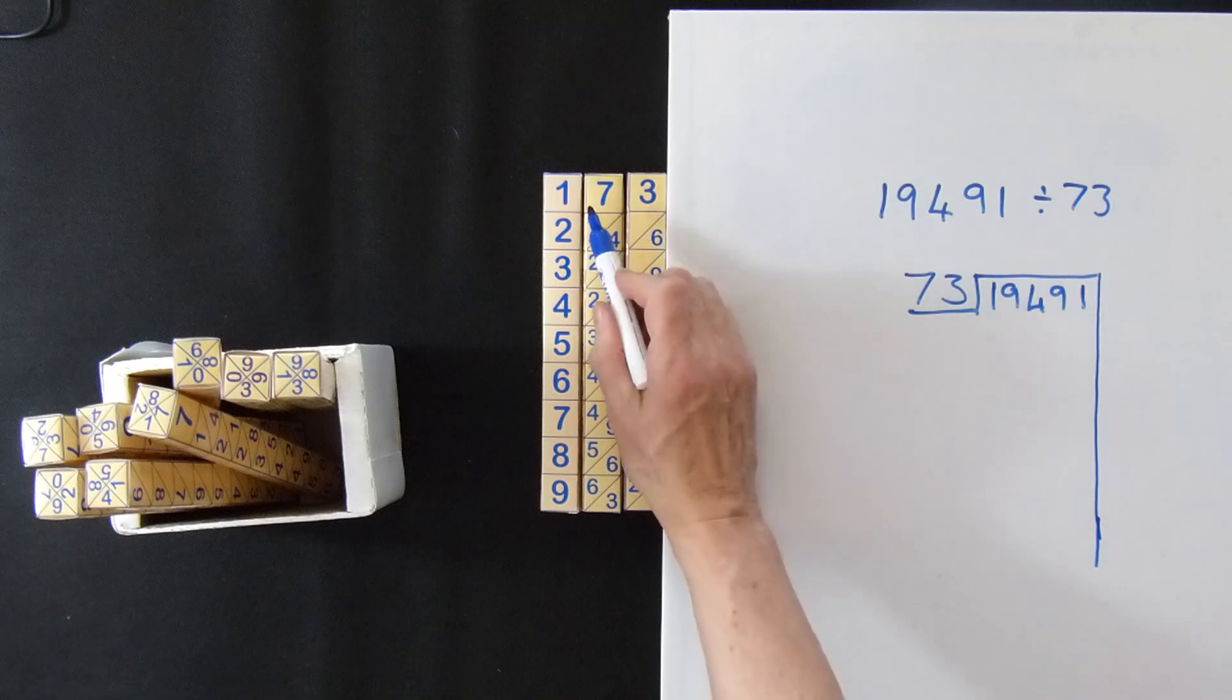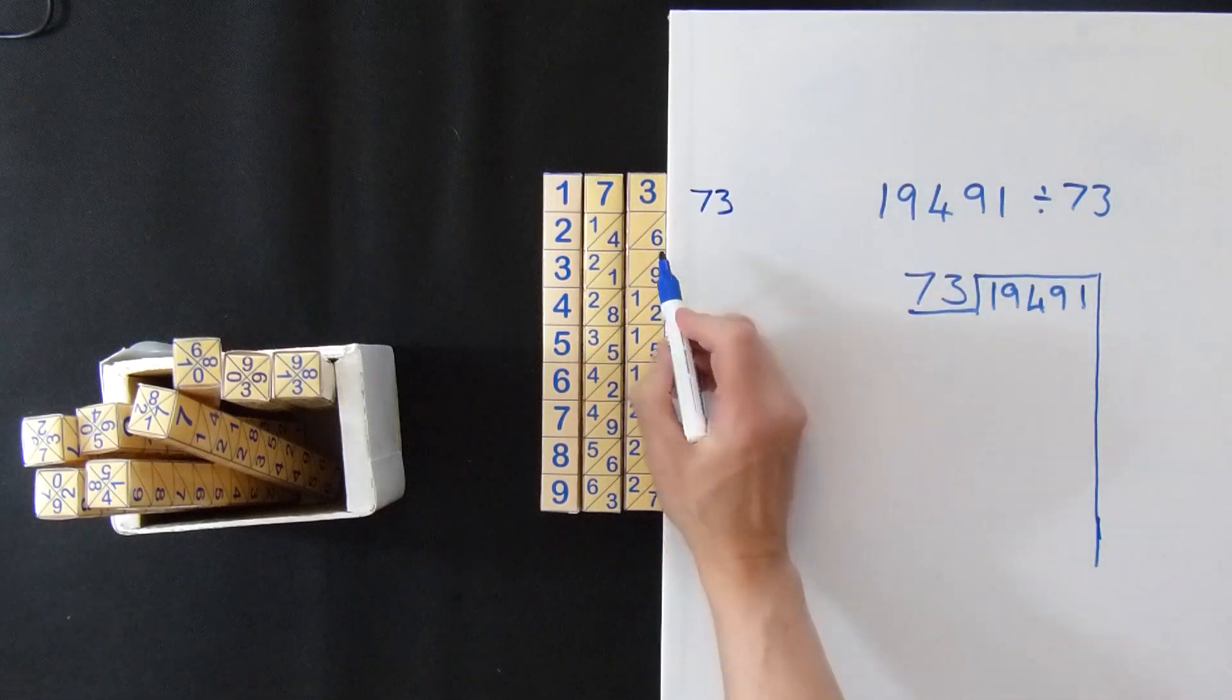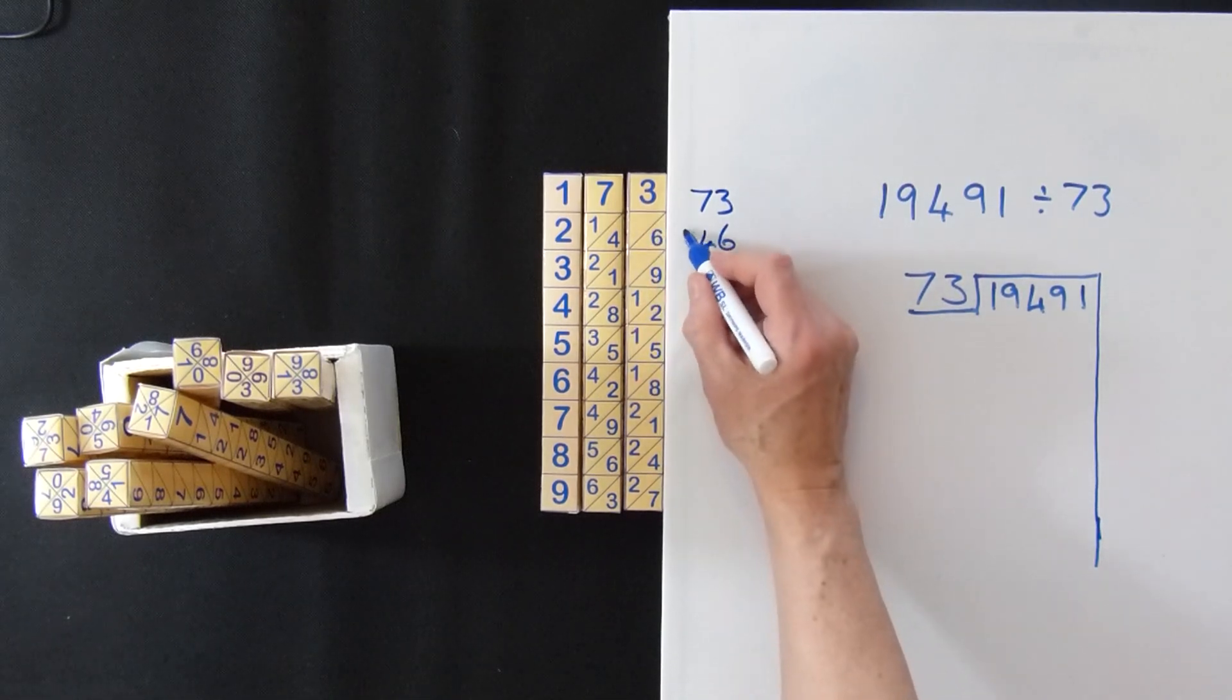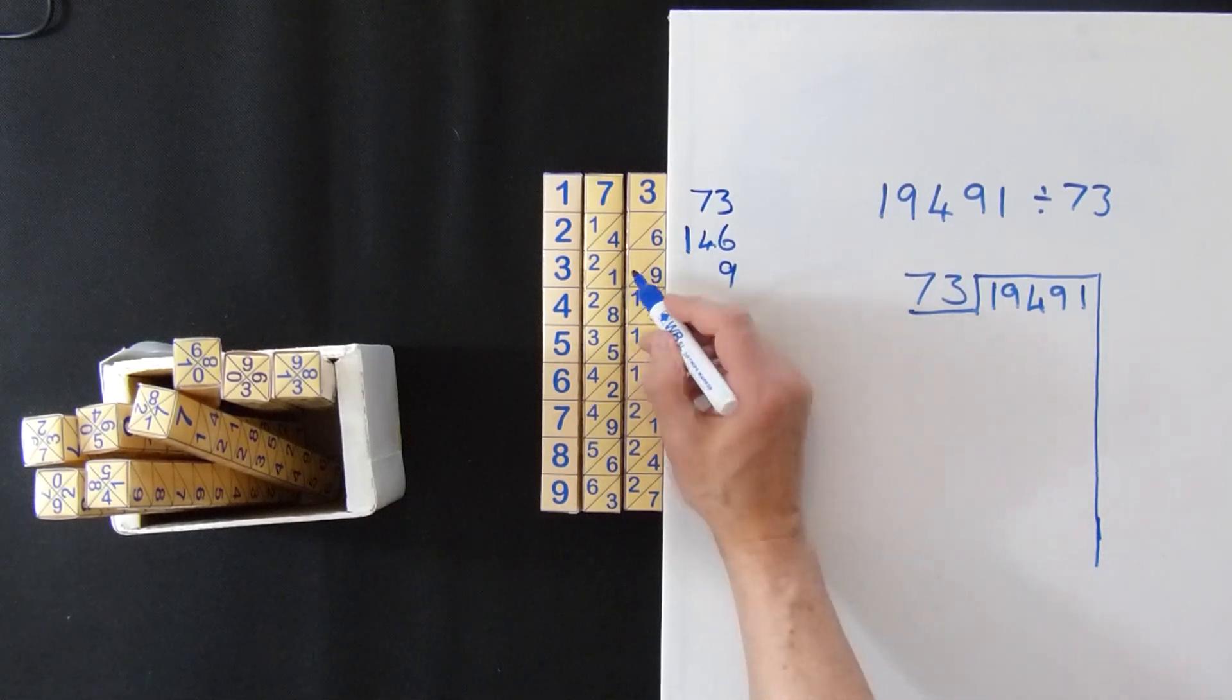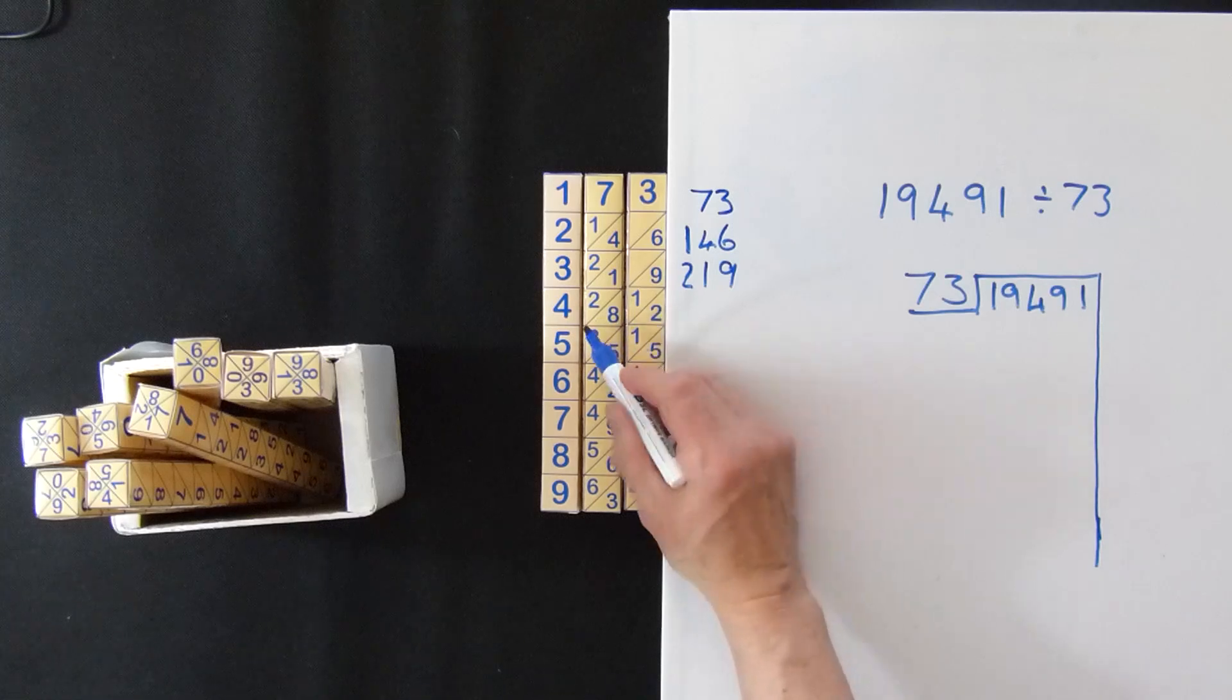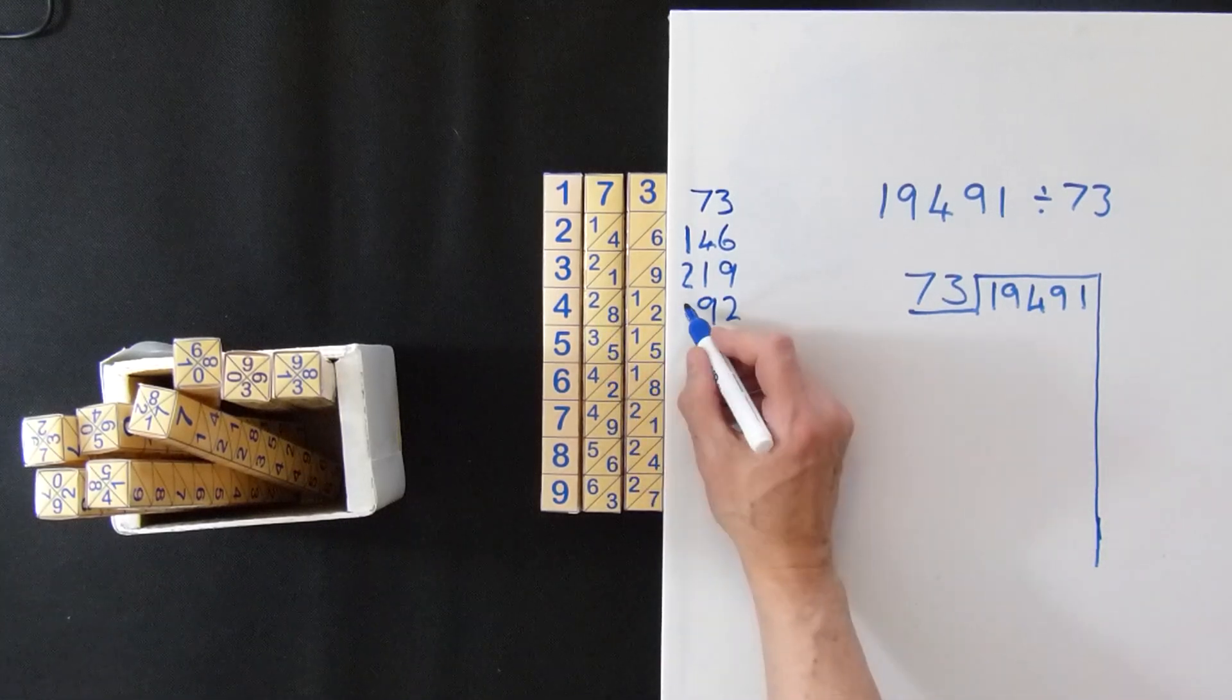You just get it here. If you look there, 1 gives you 73. 2 gives you 146. Add these two, there's only the 1, 2, 1, 9. 3 gives you 219. 4 gives you 292.